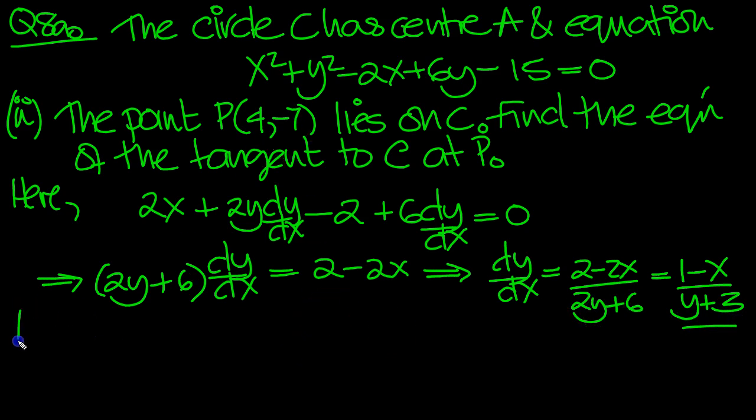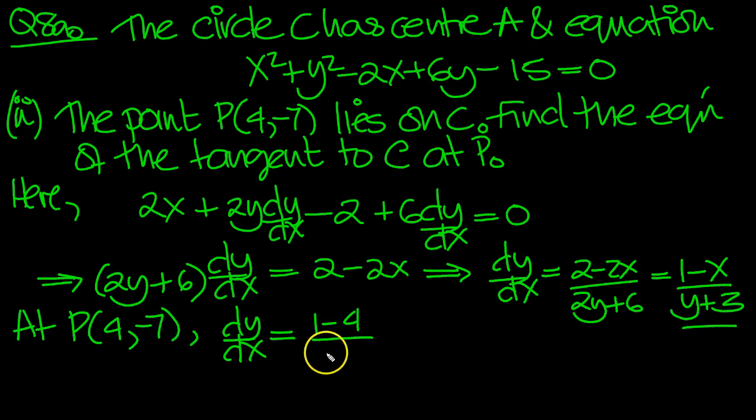So at P(4, -7), dy/dx equals the gradient at P of the tangent. Put x is 4 in: 1 minus 4, over y plus 3, y is -7 plus 3. So we get -3 on top, -4 underneath, so the answer is 3/4. That's the gradient.